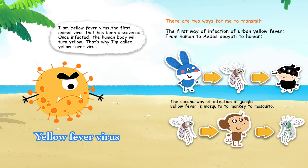I am Yellow Fever Virus, the first animal virus that has been discovered. Once infected, the human body will turn yellow — that's why I'm called Yellow Fever Virus. There are two ways for me to transmit: Urban Yellow Fever spreads from human to Aedes aegypti to human, while Jungle Yellow Fever spreads from mosquito to monkey to mosquito.